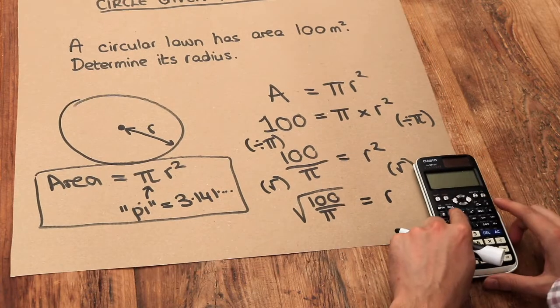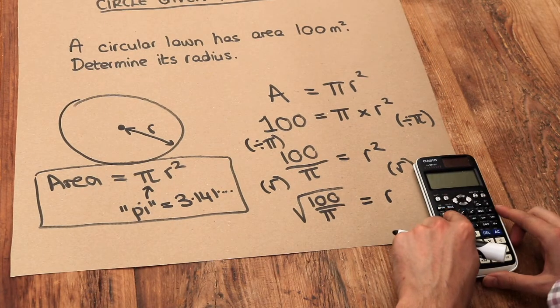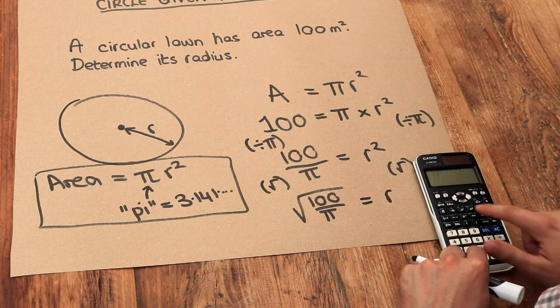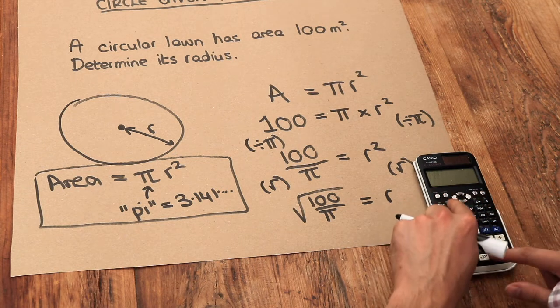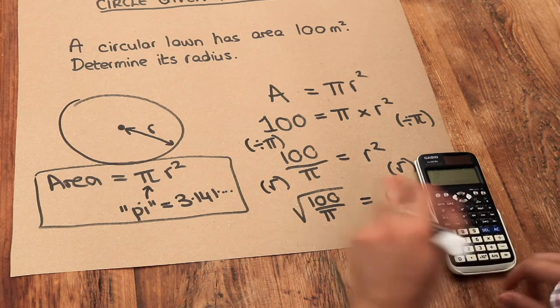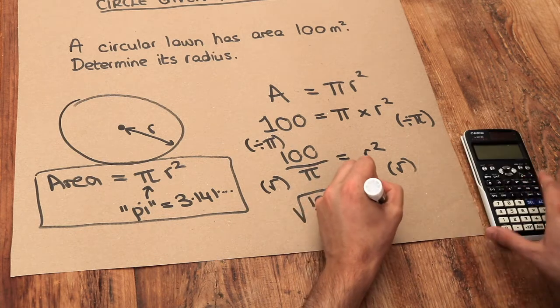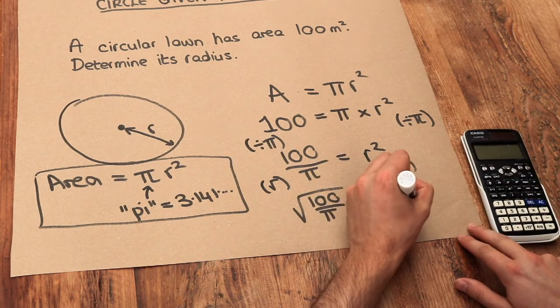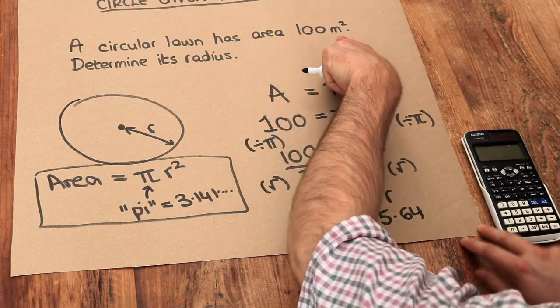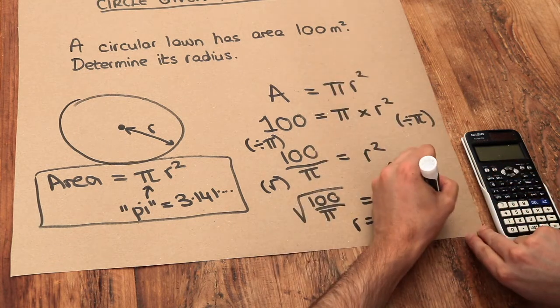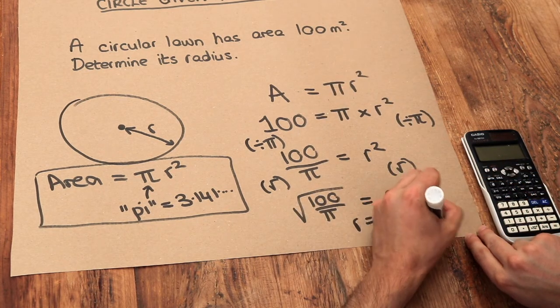Now I'm going to put that in my calculator. So square root, press the fraction button, 100 at the top, down, shift pi. And that gives me an r value of 5.64. That's going to be in metres because our area was in metres squared, and that is to three significant figures.